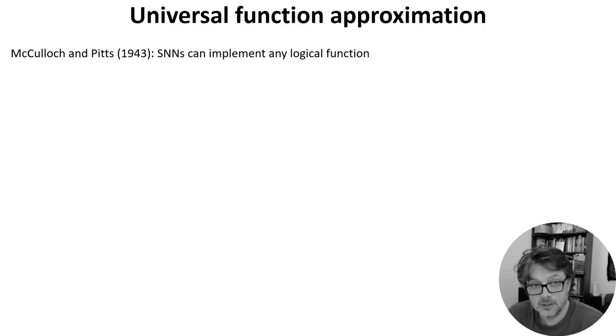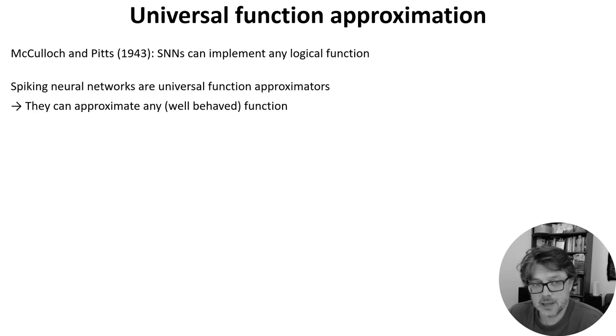If you watch the History of Neuroscience video, you'll know that as early as 1943, McCulloch and Pitts showed that spiking neural networks could implement any logical function. And we don't need to limit ourselves to logical functions. Just as for artificial neural networks, spiking neural networks are universal function approximators. That is, that they can approximate any reasonable function.